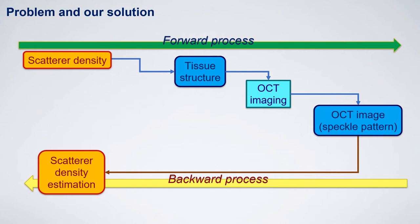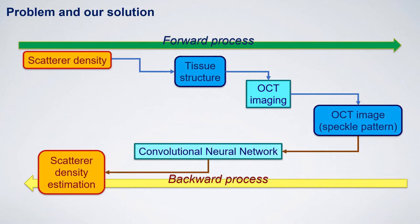The backward process is to estimate the scatter density from the OCT speckle pattern. This is what we want to do — it is complicated and hard. Here in this project, we solve this issue by exploiting the symmetry between the forward and backward process and by using a convolutional neural network, CNN.